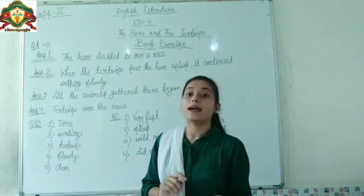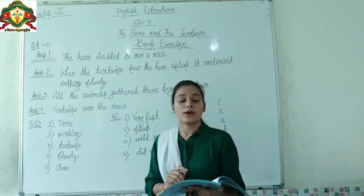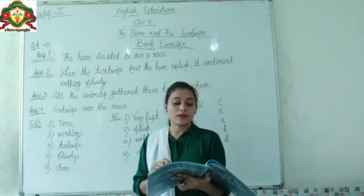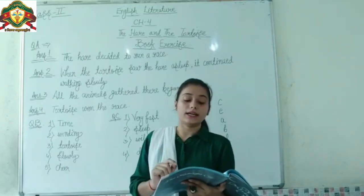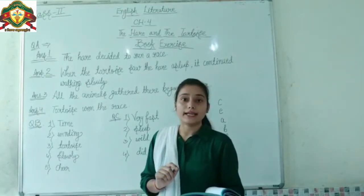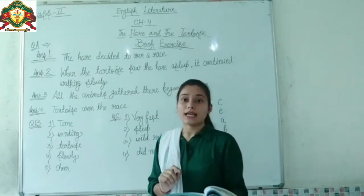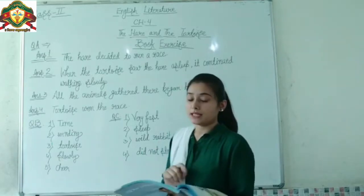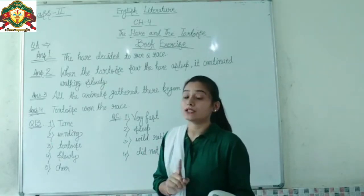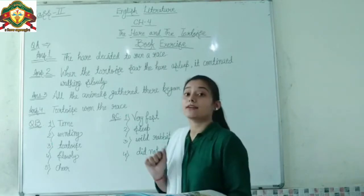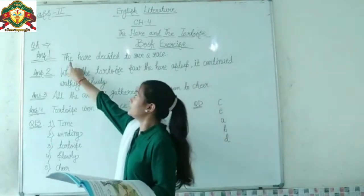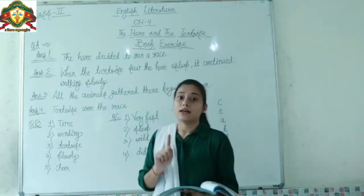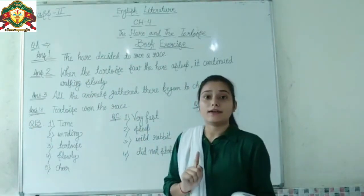Look at question number A: Answer the following questions. The first question is: What did the hare decide to do? What did the hare decide to do? — meaning, what did the hare think to do? The answer is: The hare decided to run a race.